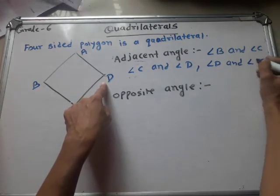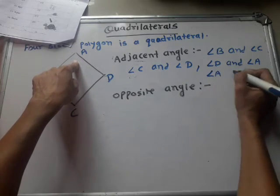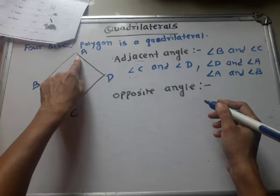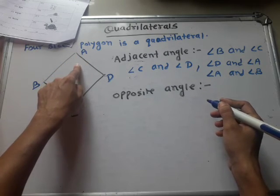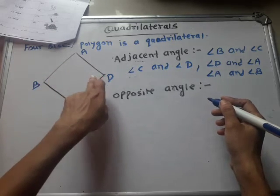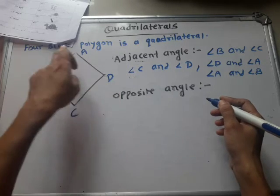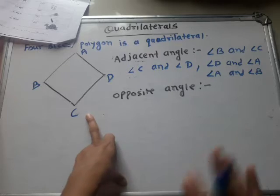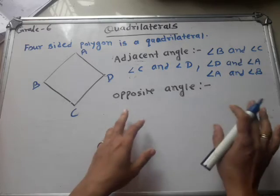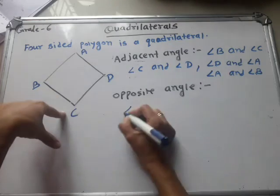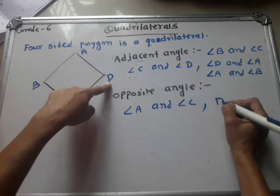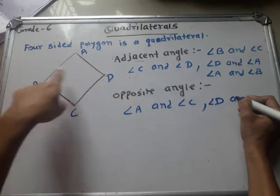Then angle D and angle A, and angle A and angle B — these are all adjacent angles. So for angle A, the two adjacent angles are angle B and angle D. For angle D, the adjacent angles are angle A and angle C. The side next to it — that is the adjacent angle. Opposite angle means angle A and angle C. Angle A's opposite is angle C. And angle D's opposite is angle B. These are the opposite angles.